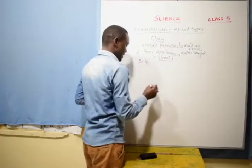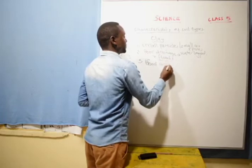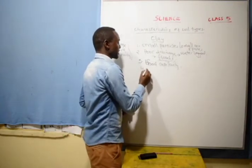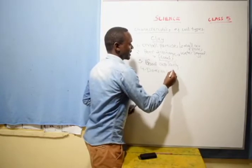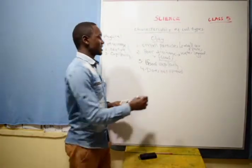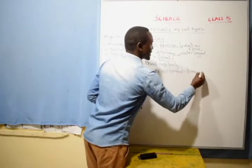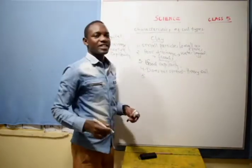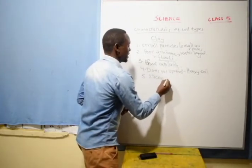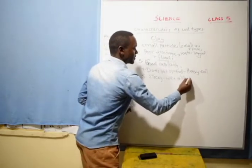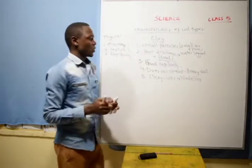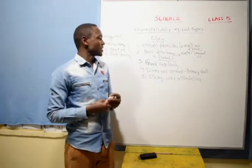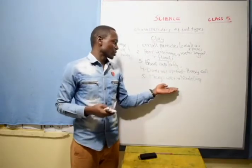Clay soil has good capillarity. It does not spread easily, so clay soil is known as heavy soil. When it is wet, it becomes sticky — it can stick to your hands and hold its particles together. That is why it is used in modeling. It can easily be used for modeling and it makes the longest ribbons.